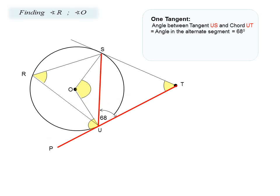Let us find angles R and O. We have the angle between tangent PUT and chord SU as 68 degrees — the only angle given so far. We know this angle must equal the angle in the alternate segment. The alternate segment gives us angle R, and therefore the angle subtended from the chord in the alternate segment is 68 degrees, so angle R is 68 degrees.